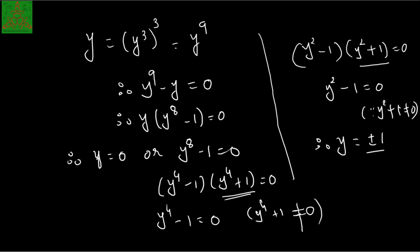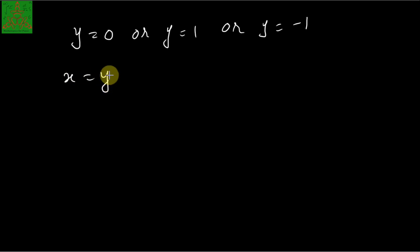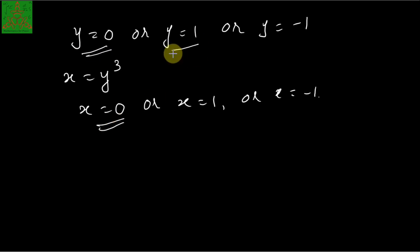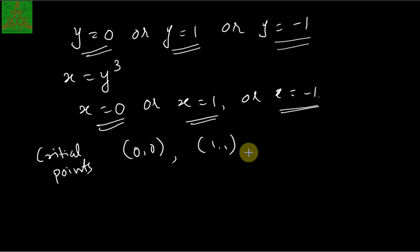Altogether, we have three values of y: y equal to 0, y equal to 1, or y equal to minus 1. Using x equal to y cubed, substituting these values gives x equal to 0, x equal to 1, or x equal to minus 1. Hence the critical points are (0, 0), (1, 1), and (−1, −1). This completes the second step.